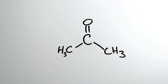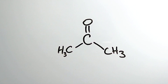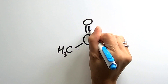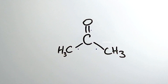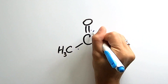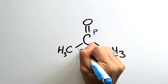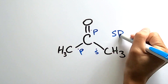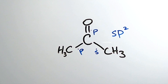Now let's take acetone as an example. Just like before, we want to determine how many bond regions or lone pair regions there are. There are three bonding regions. So we say S, P, P — this is sp² hybridized.